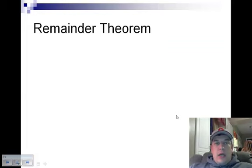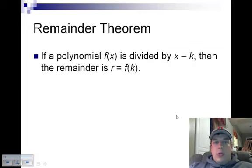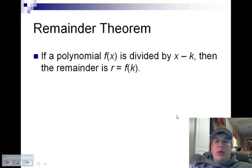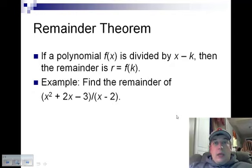The first thing we're going to say is about the remainder theorem. The remainder theorem basically states that if a polynomial f of x is divided by x minus k, then the remainder is r equals f of k. It's saying if I take a polynomial and divide it by x minus a number or x plus a number, I can figure out the remainder by just simply plugging that number into the polynomial, and that would be my answer.